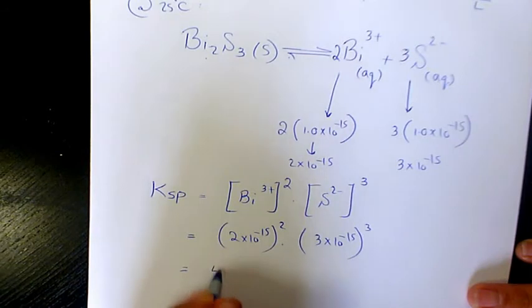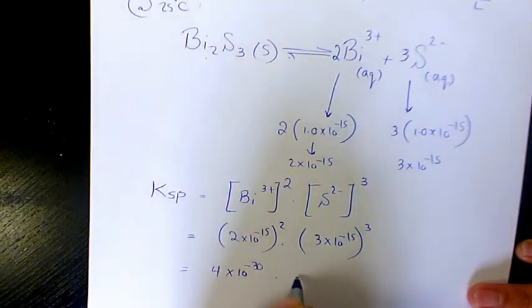That's going to make it 4 times 10 to the power of negative 30, times 27 times 10 to the power of negative 45.